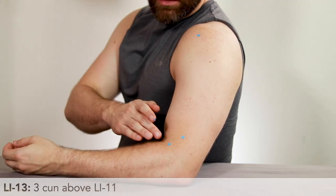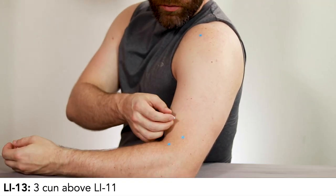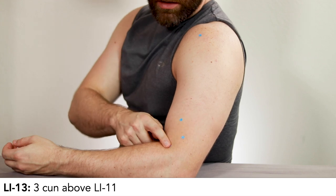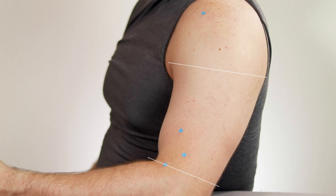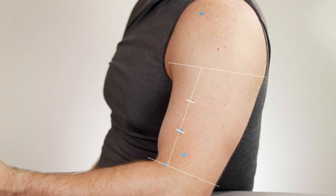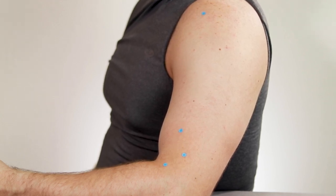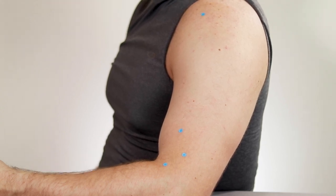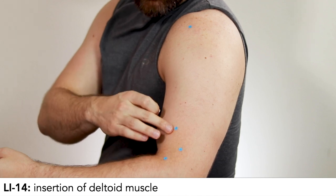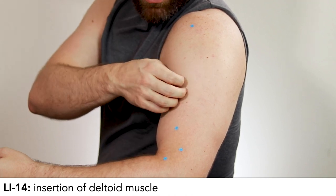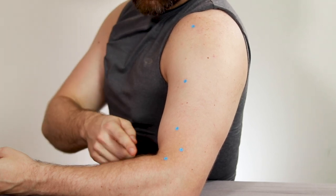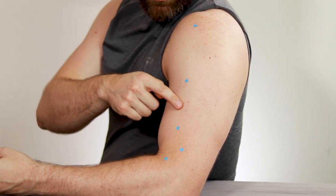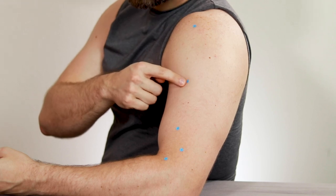Coming back to LI13, LI13 is located 3 cun above LI11 on the line connecting LI11 to LI15. Cubital crease to axillary fold is 9 cun, and we divide it into thirds to get 3 cun. Just make sure when you're measuring, you're measuring from the axillary fold, not LI15. LI14 is above LI11 at the insertion point of the deltoid muscle. This one doesn't really have a cun measurement, you just have to palpate for it. Start at LI11 and just come up towards LI15 until you hit the border of the deltoid muscle.